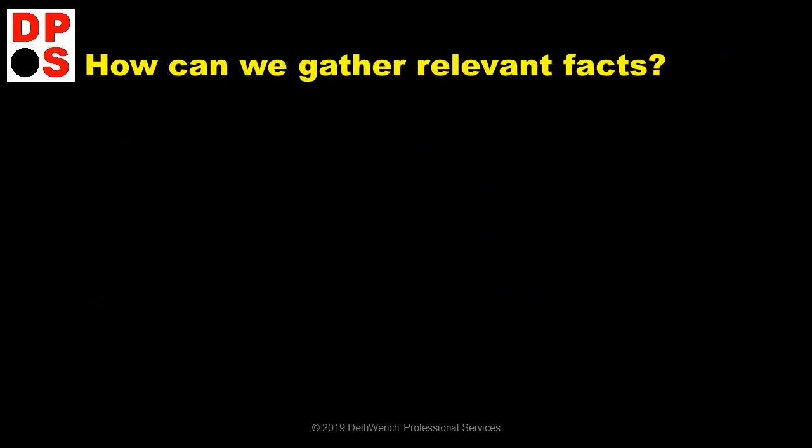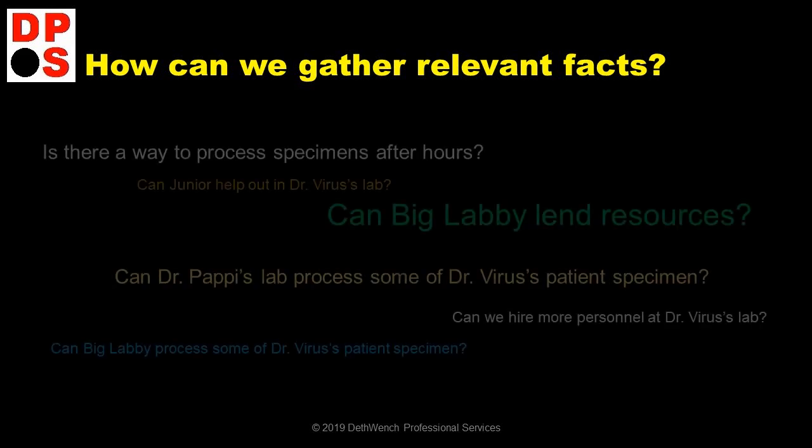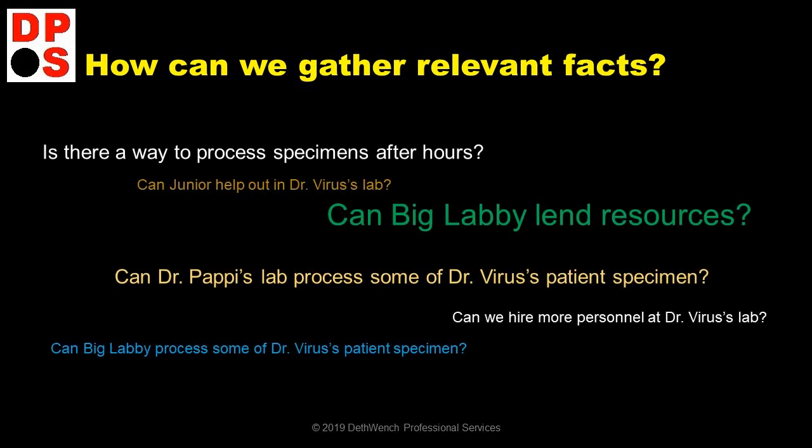Again, a good way to start is to think of facts that could be known that could help the group come to a strategic plan. Stepping back, the problem here is that Dr. Virus lacks resources. There is too much work for one lab.